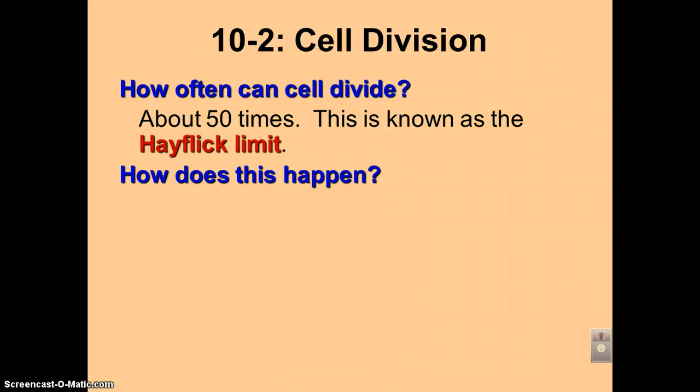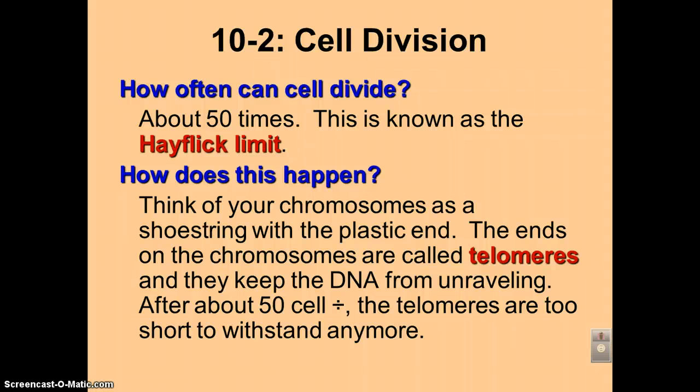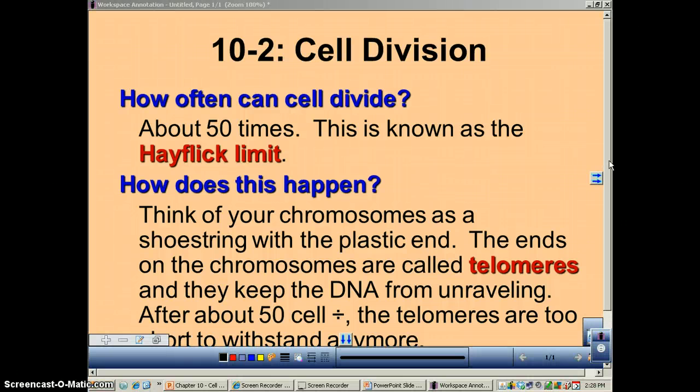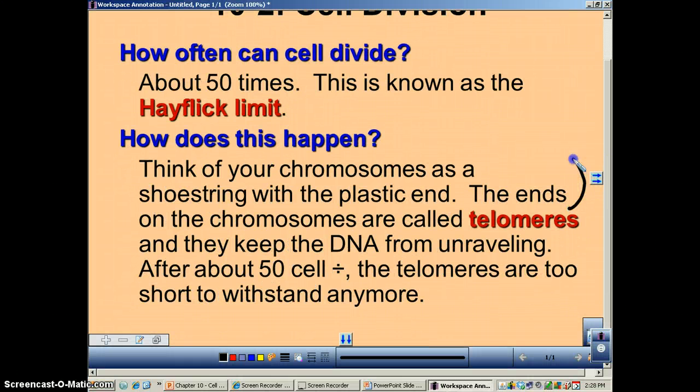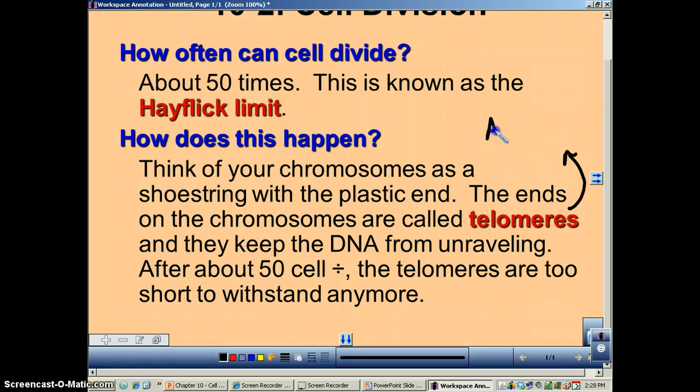Now why is it about 50 times? Well, it has to do with a structure called a telomere. Telomeres are at the very tip of a chromosome. And basically, if you think of your shoelace, a telomere is essentially an aglet. That's the little plastic thing that's at the tip of your shoelaces.